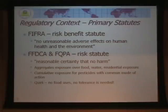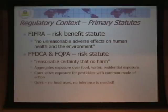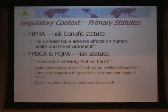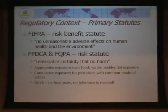Our second main law is FFDCA, as modified by a third law called FQPA — the Food Quality Protection Act. For food, you don't get to do risk-benefit balancing. The standard under FQPA is 'reasonable certainty of no harm.' You have to be sure there's no harm, and you don't get to balance that against potential benefits. So if there's a risk from food, there is less tolerance at the national level, as Congress has told us, over how much risk we'll tolerate.